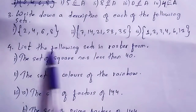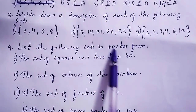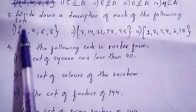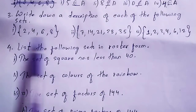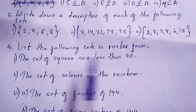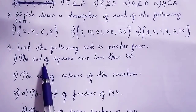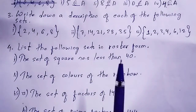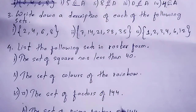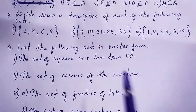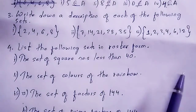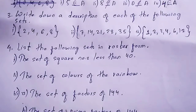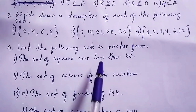Question 4: List the following sets in roster form. Roster form means writing the elements inside curly brackets separated by commas. Number 1: the set of square numbers less than 40. Square numbers are 1² = 1, 2² = 4, 3² = 9, 4² = 16, 5² = 25, 6² = 36, and 7² = 49.